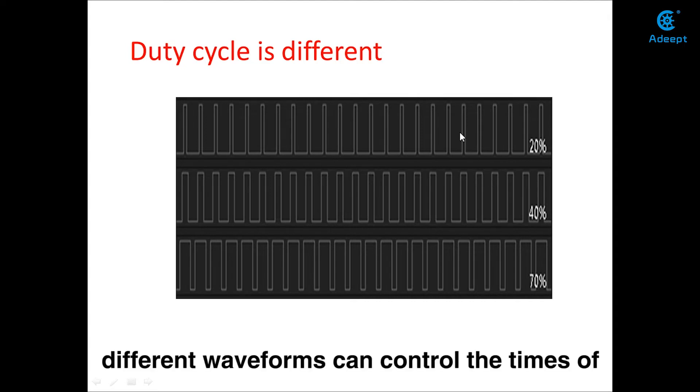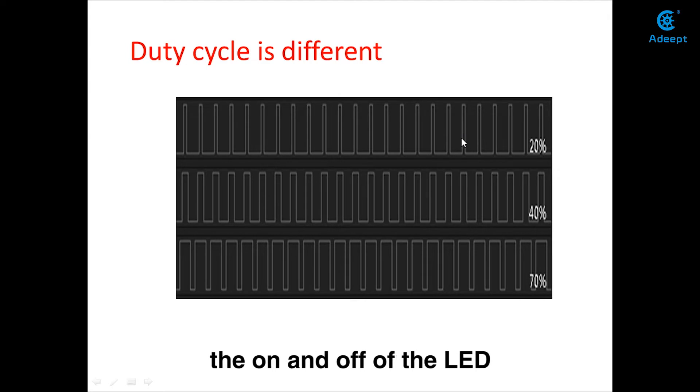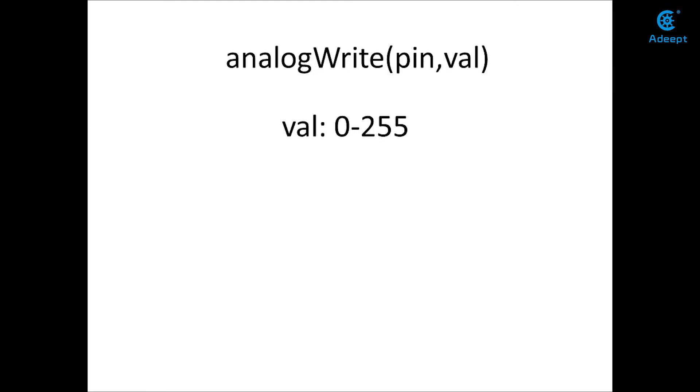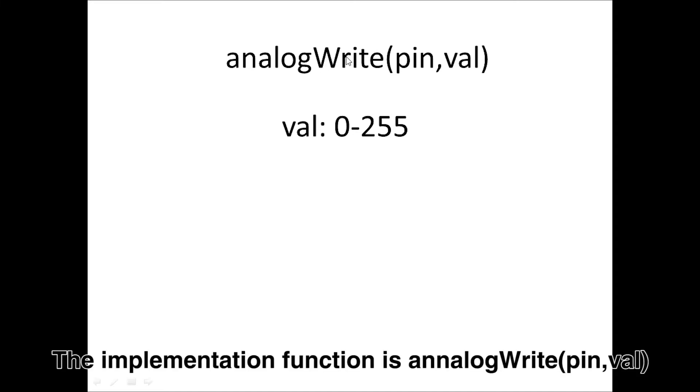In this way, different waveforms can control the times of the on and off of the LED, thus controlling the LED to emit different light. Pay attention to that. The duty cycle value of the PWM waveform set by Arduino ranges from 0 to 255, and the duty ratio corresponds to 0 to 100%. The implementation function is analogWrite.